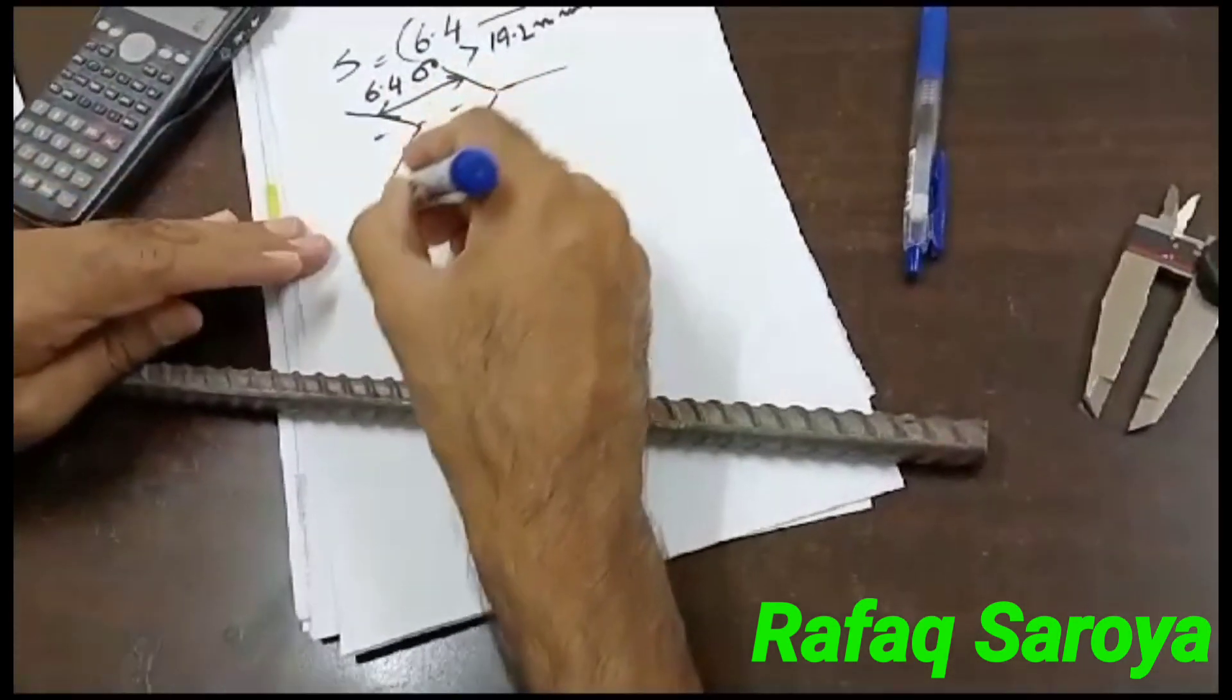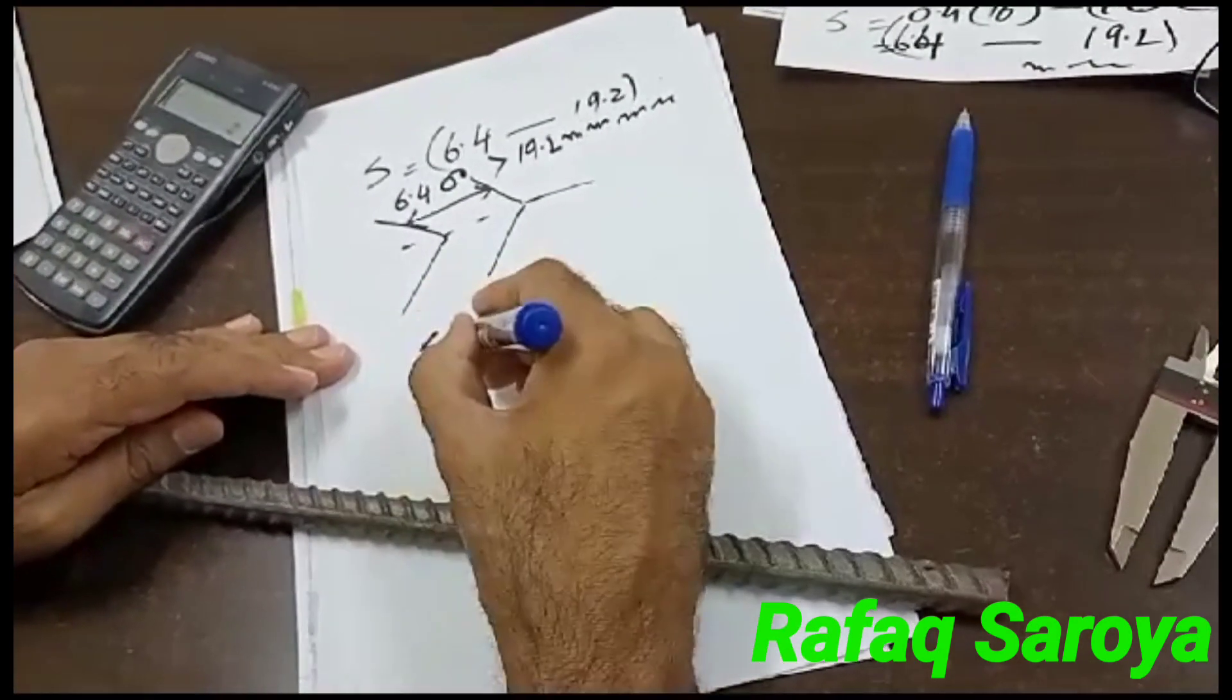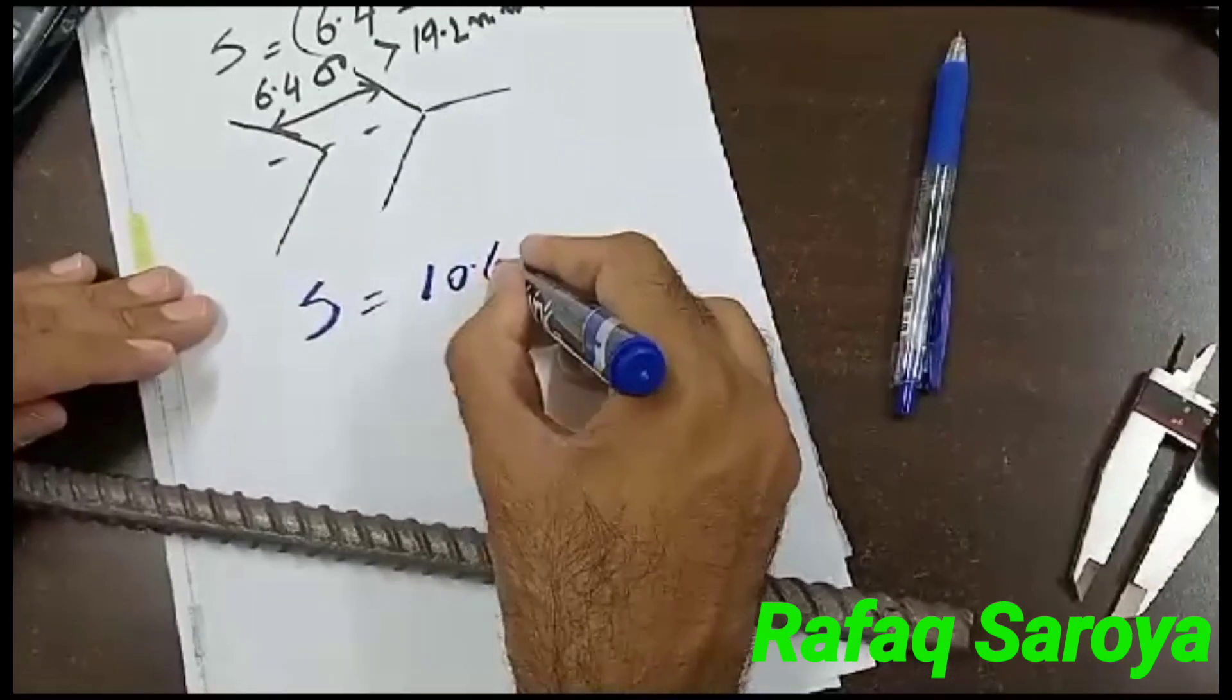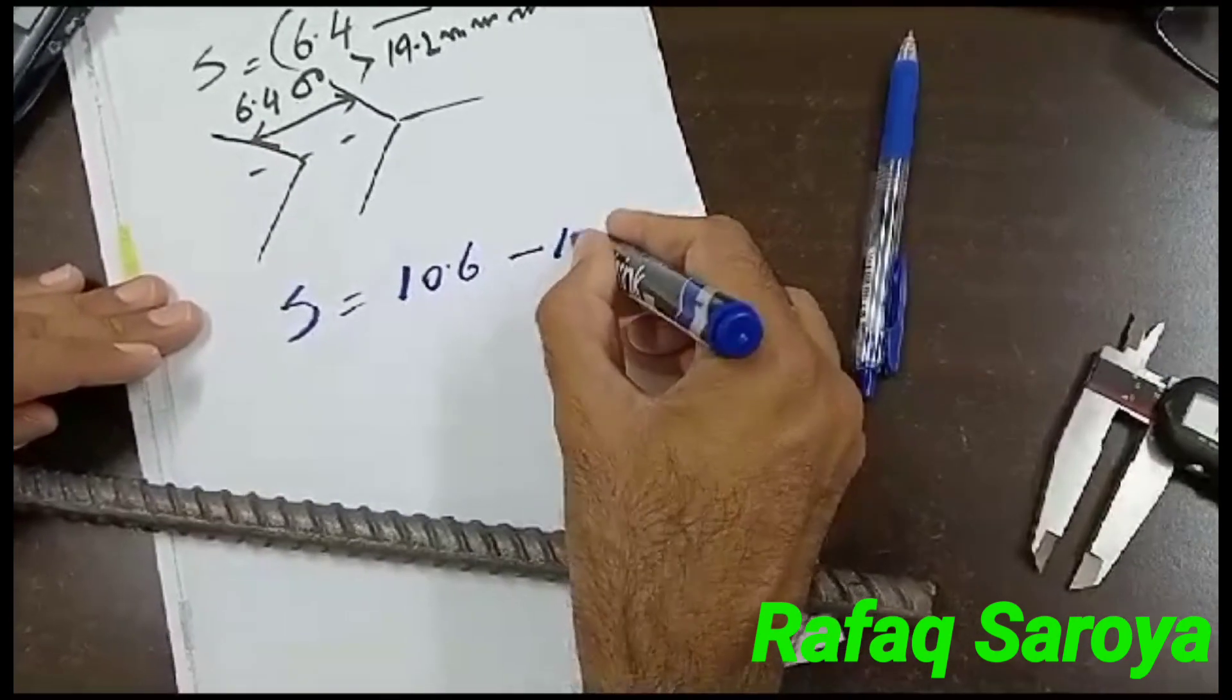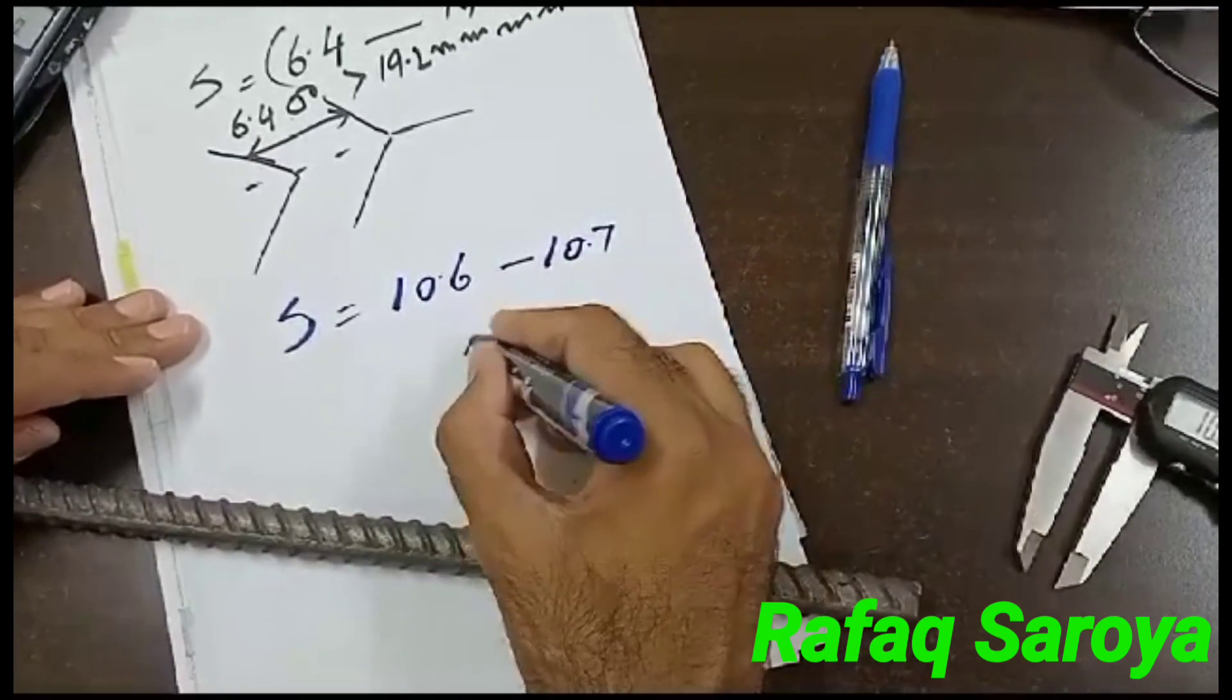It comes out to be 10.7. So this shows that the bar which is available to me, the spacing as I have measured is 10.6 at one point, and at another point it is 10.7mm.